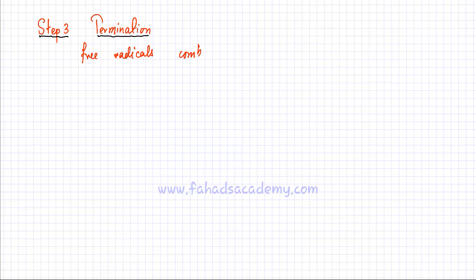The very last step of free radical substitution involves termination, which means that two free radicals are going to combine with each other so free radicals get used up. In the previous steps, a lot of free radicals were formed. What a free radical is, for example, you have a methyl radical which was formed in the earlier steps.